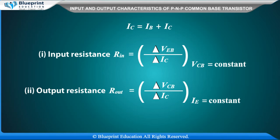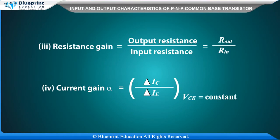Input resistance Rin is equal to delta VEB divided by delta IE, with VCB kept constant. Output resistance Rout is equal to delta VCB divided by delta IC, with IE kept constant. Voltage gain AV is equal to Rout divided by Rin.